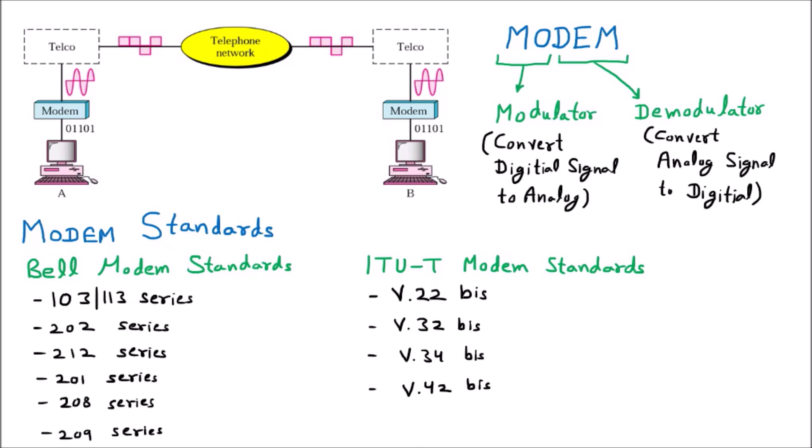And the next one is v.42 bis. So these are the different types or standards under the ITU-T modem. The next category is the intelligent modem, which is the last category. There are especially three types of modem: one is the traditional modem, second is the 56K modem, and the next one is the cable modem.